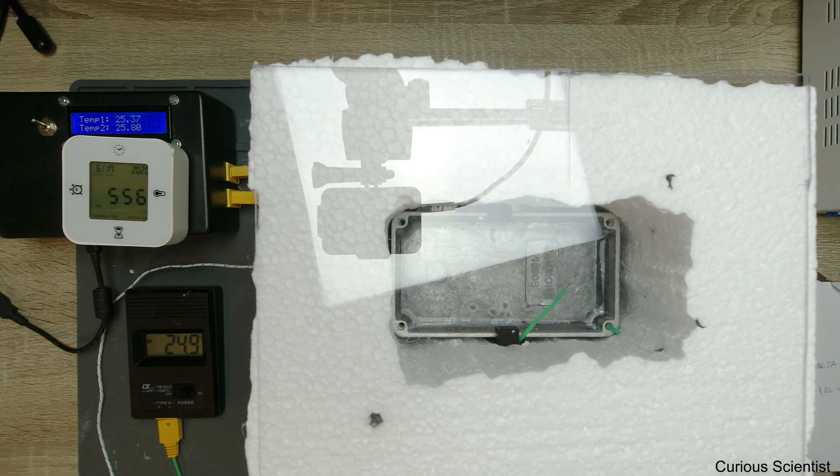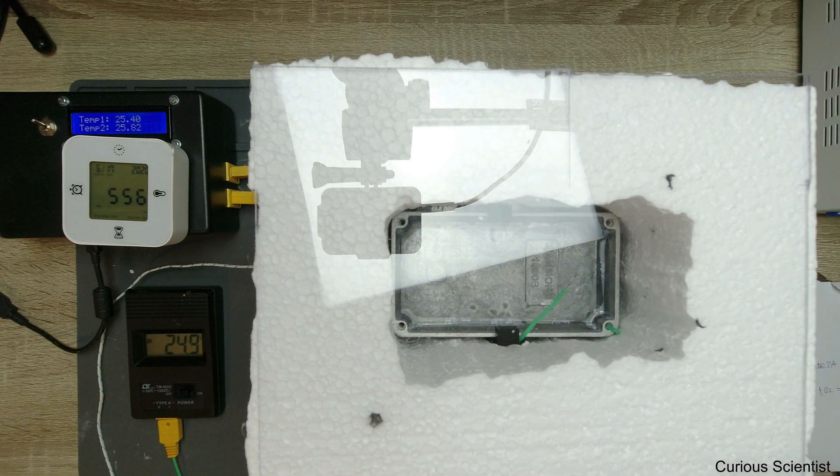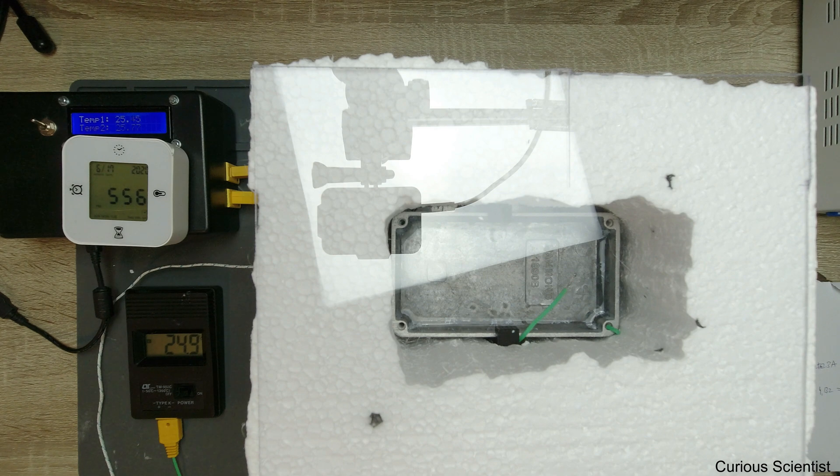So basically this is all. Just to repeat, this is a polystyrene foam and I covered it with plexiglass, so you can see the reflection of my camera and the light.